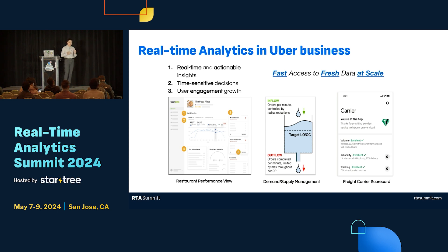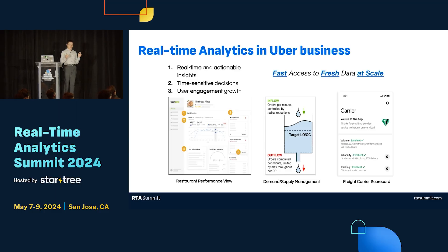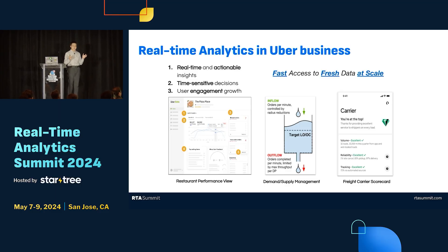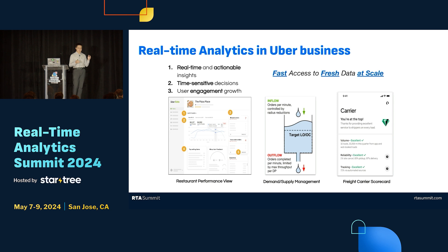Why is this important for Uber? There are three things we see as very valuable for Uber to use RTA. One is to gather real-time and actionable insights. You can see on the screen in the left corner a screenshot of our product called Restaurant Manager, where we show restaurant owners across the globe how they view the performance of their restaurants and then take actions. Real-time information is important because if there are orders in trouble or real-time signals that require immediate action from them.